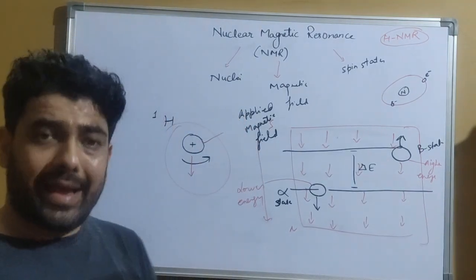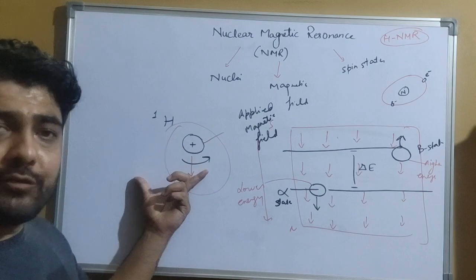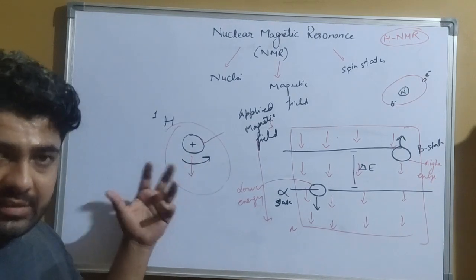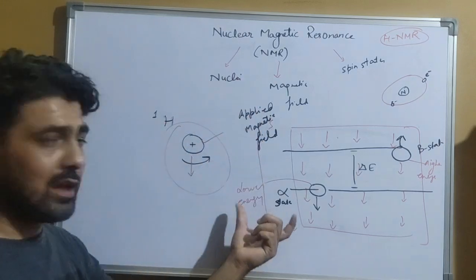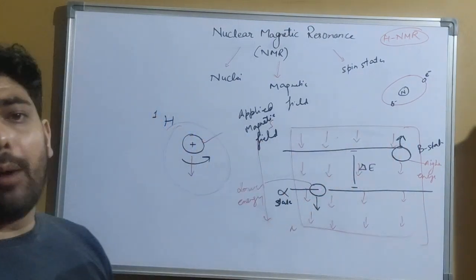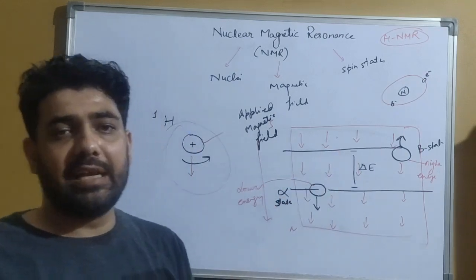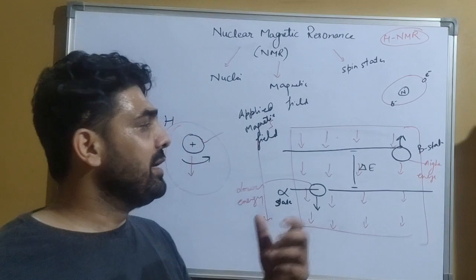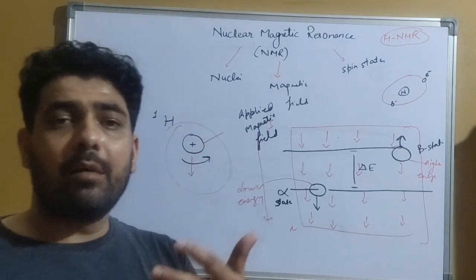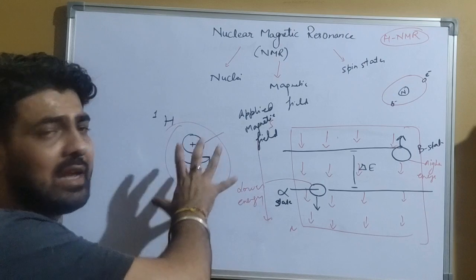So far, we have seen two portions of nuclear magnetic resonance. First, charged nuclei when spinning around their own axis exhibit a magnetic field. Second, when these charged nuclei are placed inside an externally applied magnetic field, they align either with the field (alpha spin state, lower energy) or against it (beta spin state, higher energy). The energy difference between these two spin states is delta E. Now let's discuss the third step of NMR.